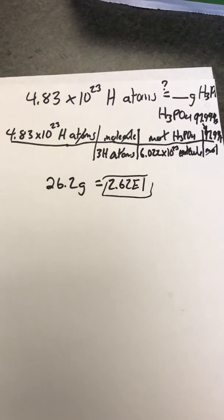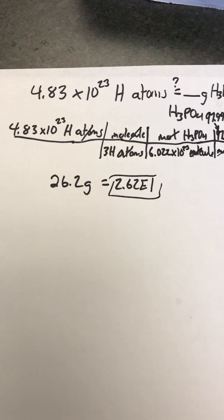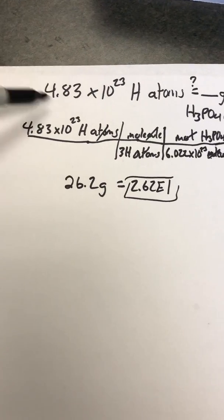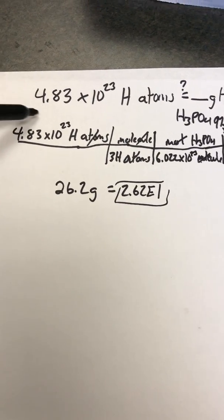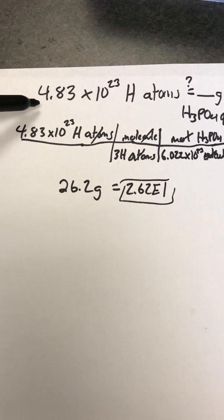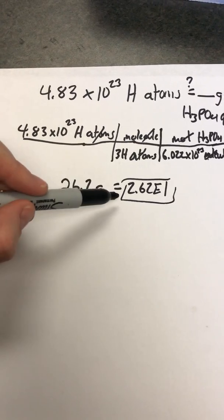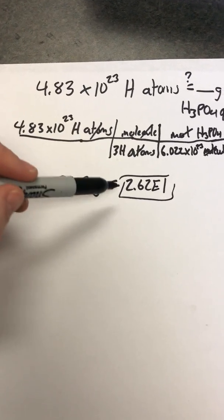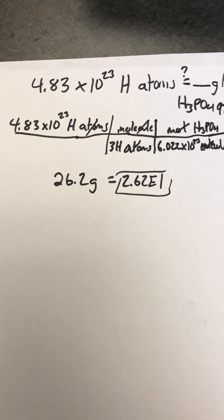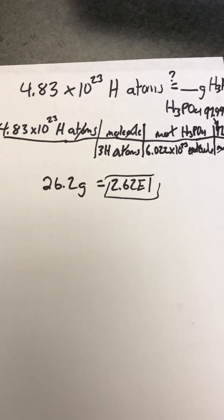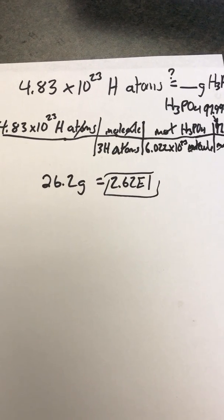Does that make sense? We had less than a mole of hydrogen atoms, so we should expect less than one mole's worth of mass — which is less than 97.994 grams — and that's exactly what we got.